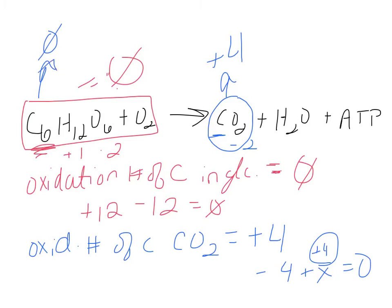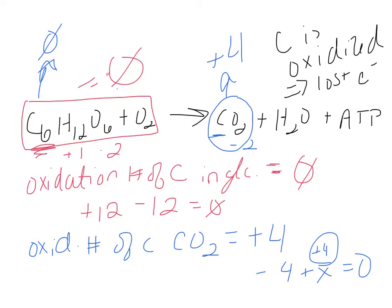Glycolysis occurs in the cytoplasm of both prokaryotic and eukaryotic cells. Prokaryotic cells have no membrane-bound organelles, while eukaryotic cells do. However, both have cytoplasm, so glycolysis doesn't require any special machinery — it happens in the cytoplasm. You don't need a mitochondria to do glycolysis.